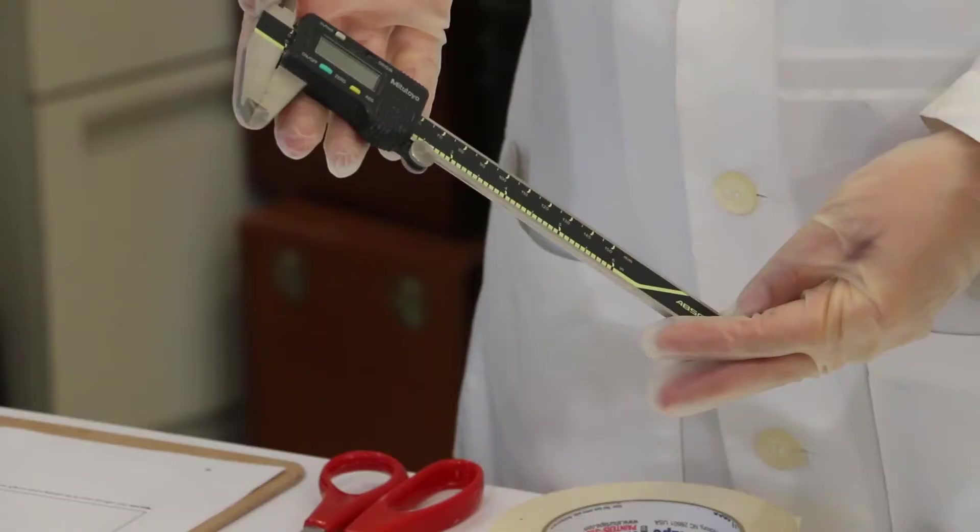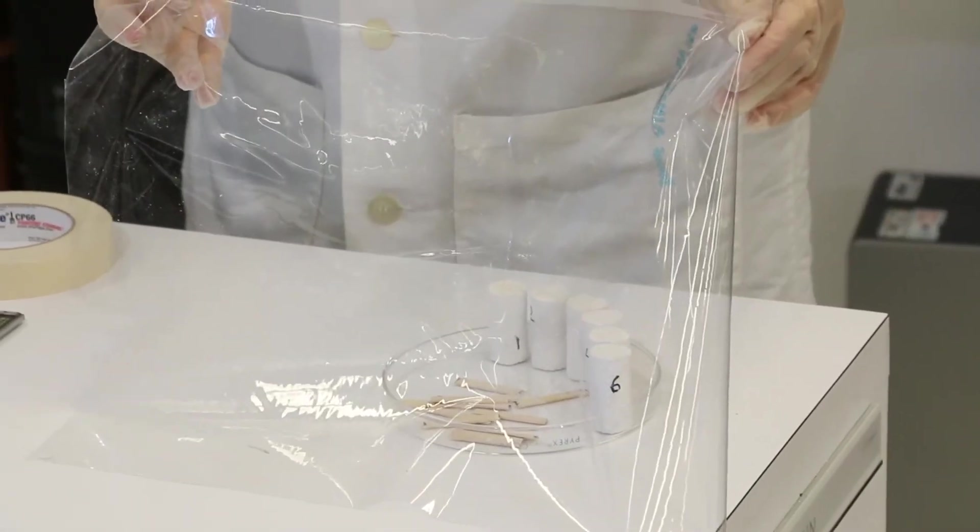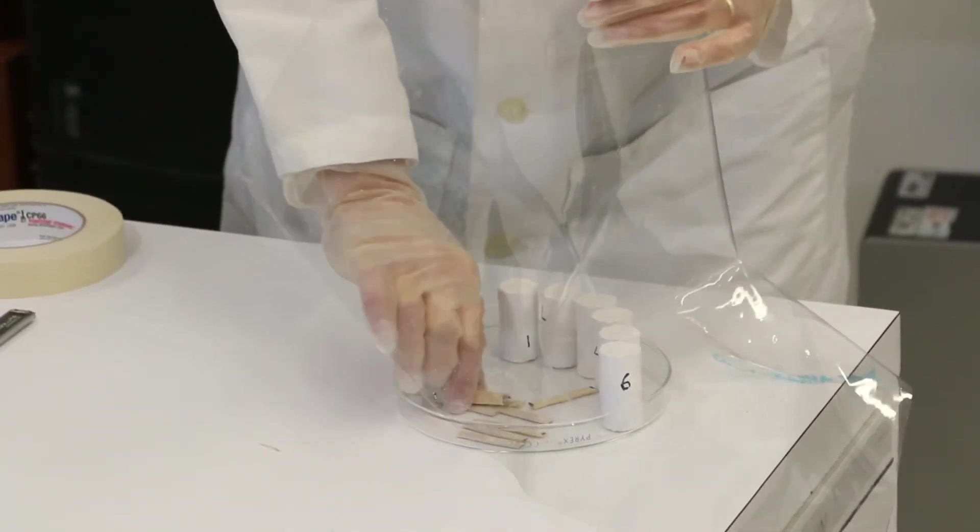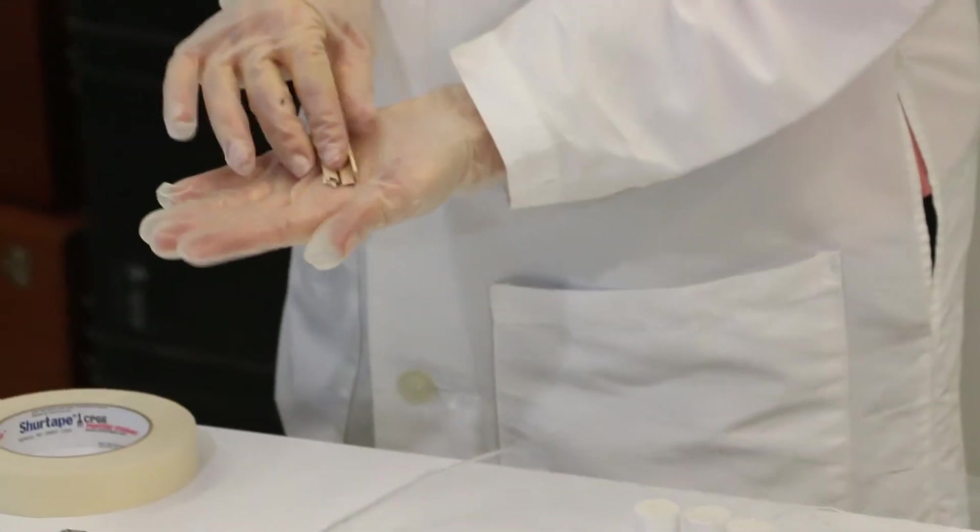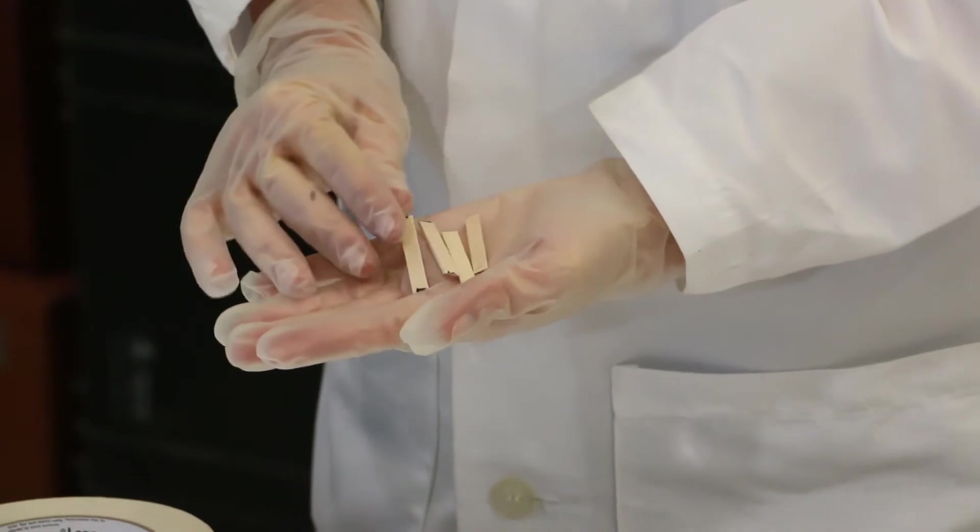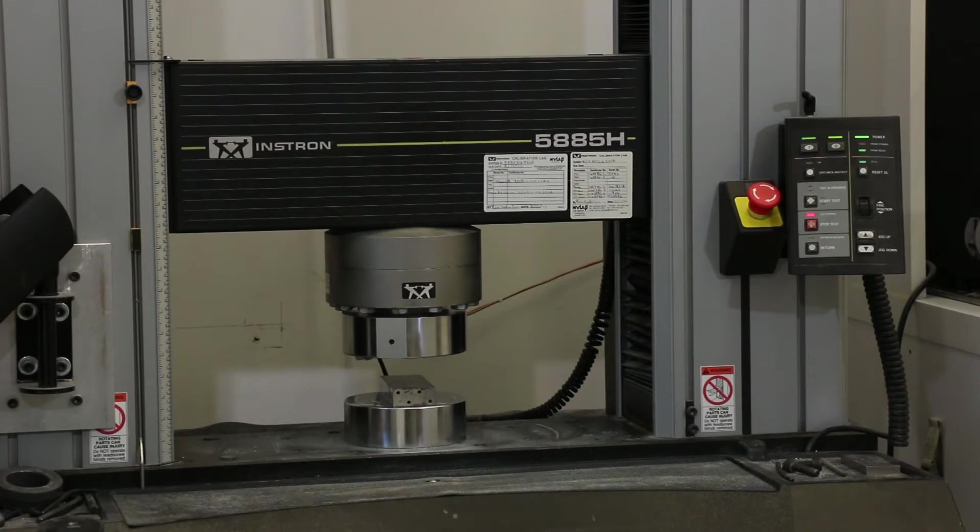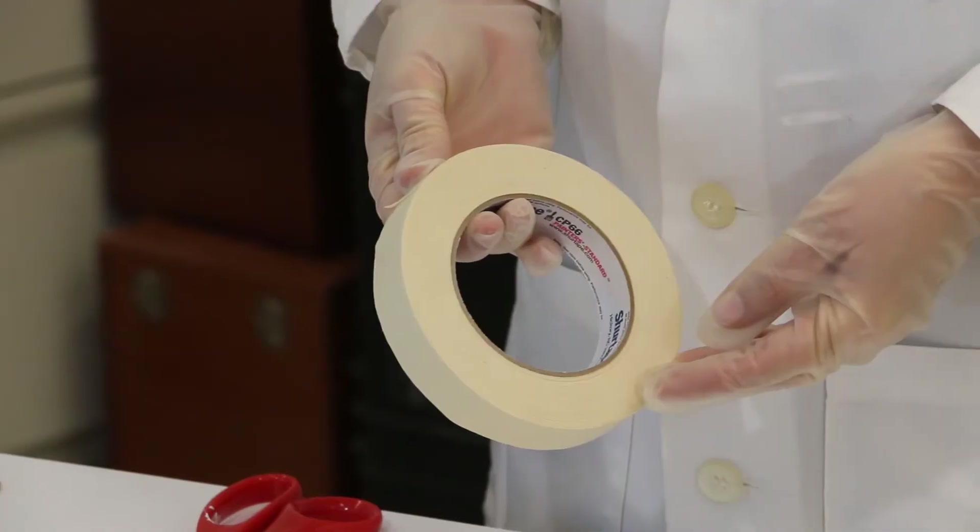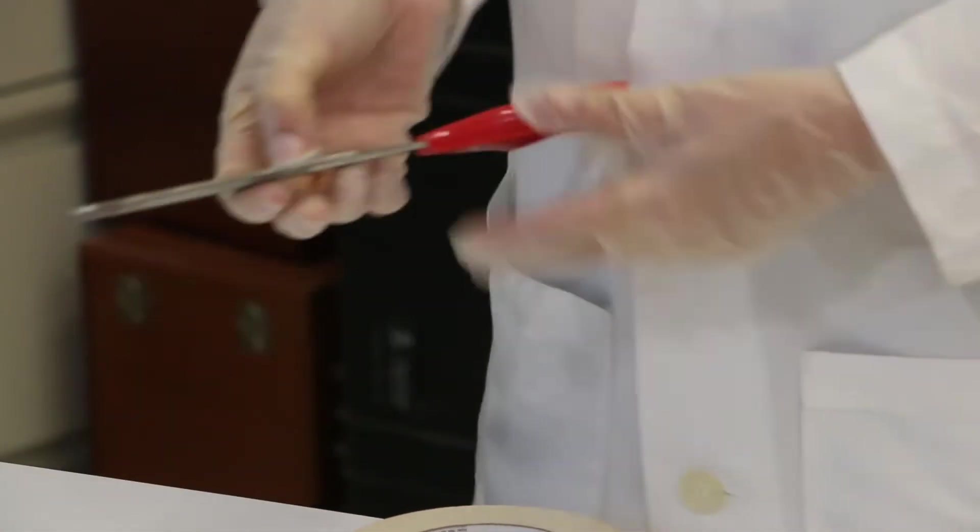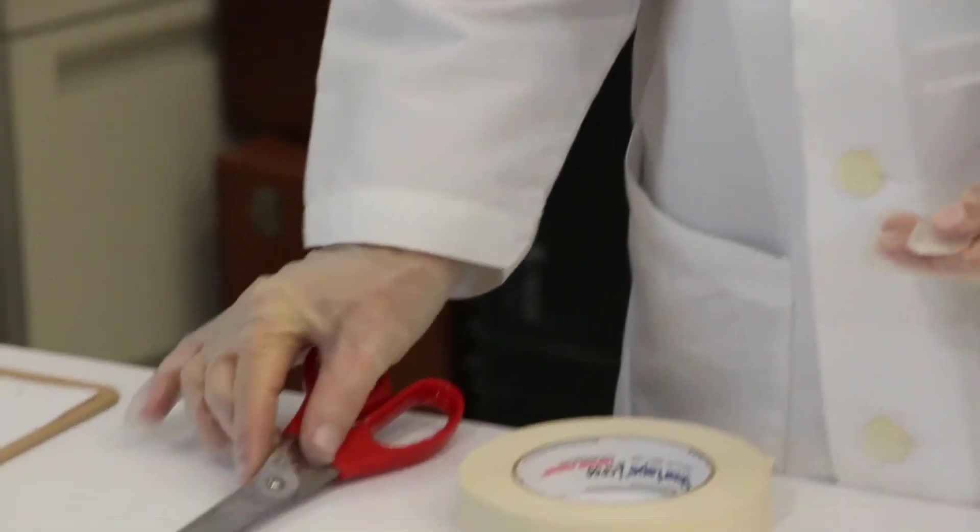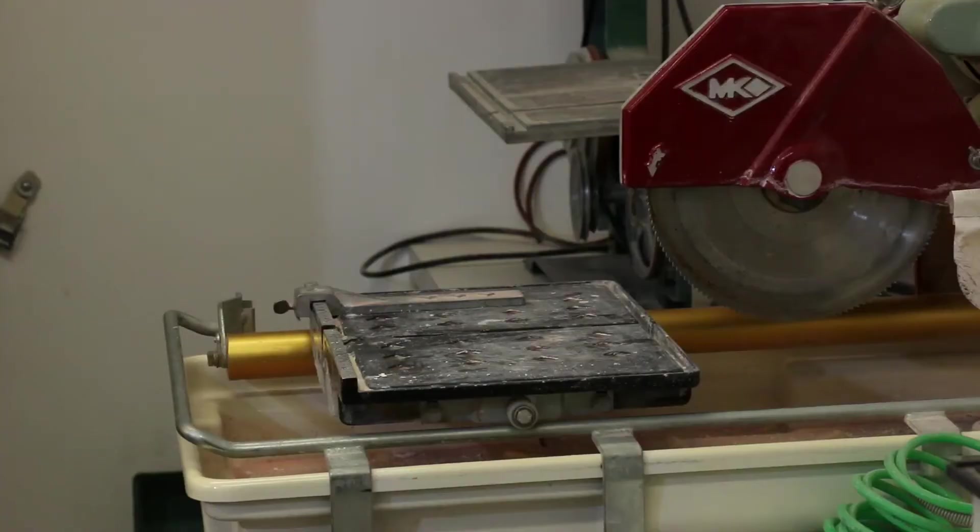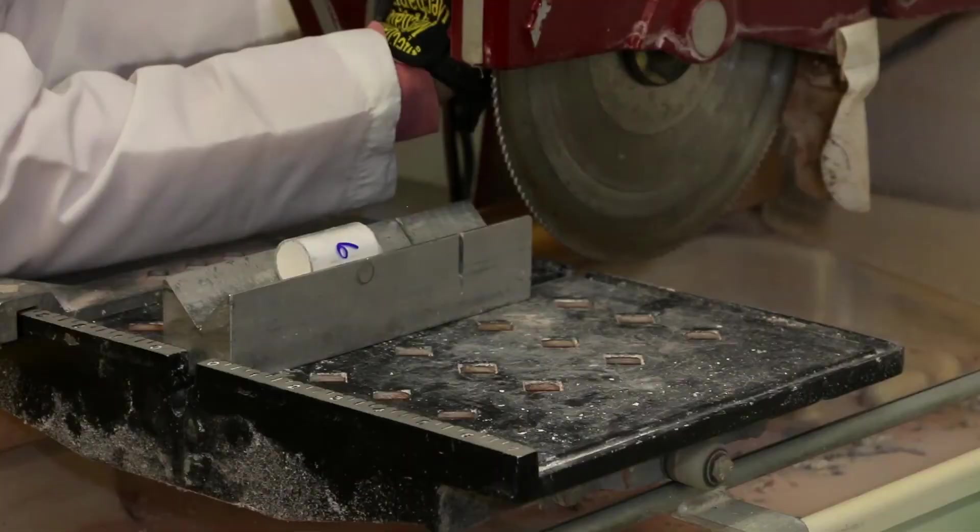For this test, we will need: a caliper with a resolution of 0.01 mm, 4 mm plastic sheet, 12 wooden strips approximately 5 mm wide, 40 mm long, and 1 mm thick, an Instron universal mechanical testing machine or any mechanical testing equipment capable of compressive loading, tape, scissors, a tile saw, and a V-shaped specimen holder for cutting.